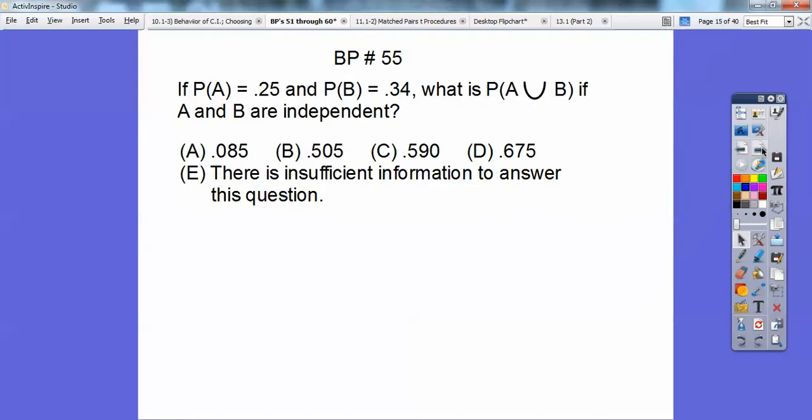All right, so if the probability of A is 0.25, and the probability of B is 0.34, what is the probability of A union B if A and B are independent? Well, if they're independent, then remember this formula. A union B is the probability of A plus the probability of B minus the probability of A intersection B. Remember, if we had two circles that overlapped, and they had that little middle piece right here, that little middle piece was this part right here. So when you add this circle A and you add this circle B, the middle piece gets counted twice.